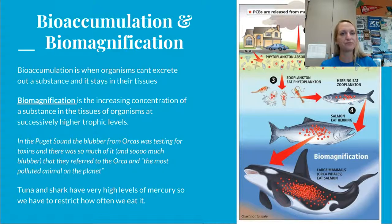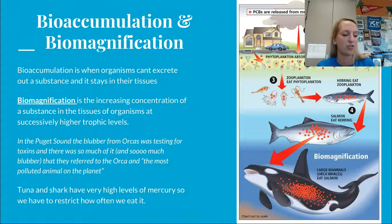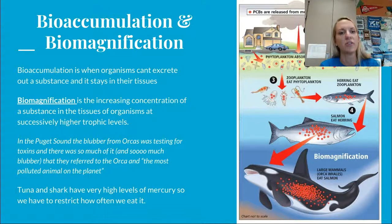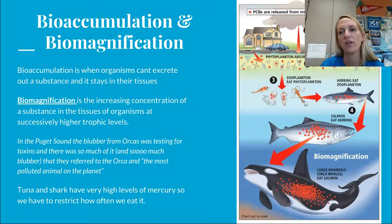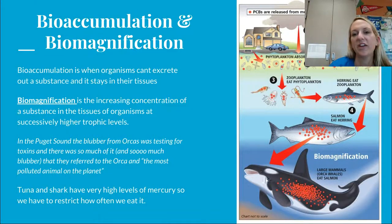Bioaccumulation is when an organism cannot excrete a substance and it accumulates in their tissues. Biomagnification is the building up of those toxins through trophic levels as higher-order organisms consume more food. In the Puget Sound, orca blubber was tested and found to contain so much toxin that orcas are referred to as the most polluted animal on the planet. PCBs released in the atmosphere get leached into water: phytoplankton absorb small amounts, zooplankton accumulate more, fish eating zooplankton have even more built up, as do salmon, which are then consumed by orcas.